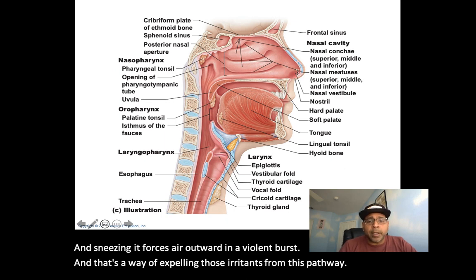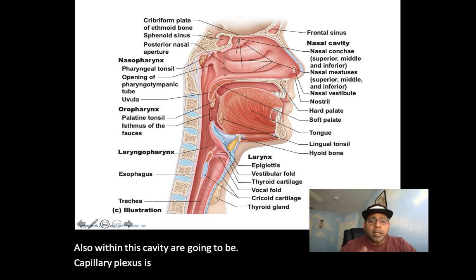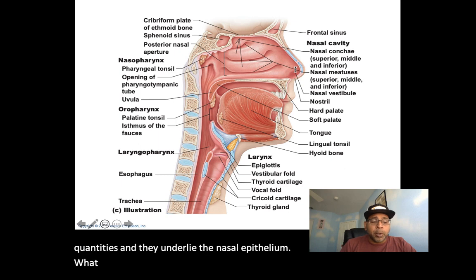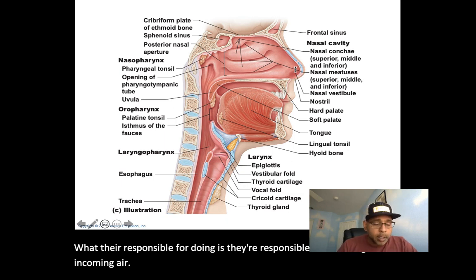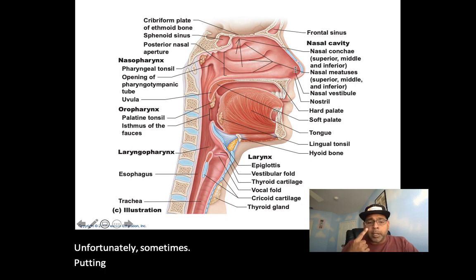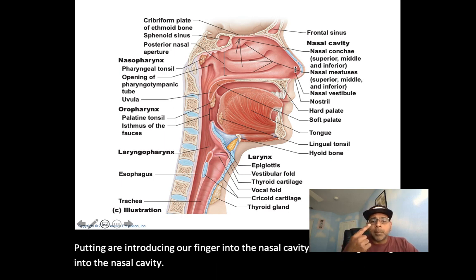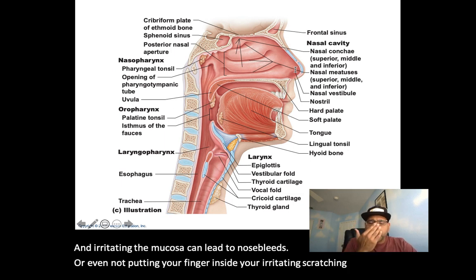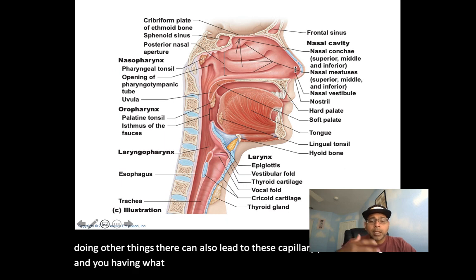Also within this cavity are capillary plexuses found in abundant quantities underlying the nasal epithelium. They are responsible for warming this incoming air. Introducing a finger into the nasal cavity and irritating the mucosa can lead to nosebleeds — epistaxis — as these capillary plexuses can burst.